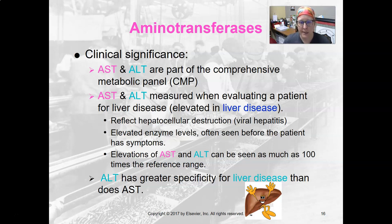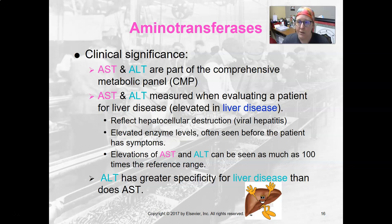They're elevated in liver disease and reflect hepatocellular destruction — viral hepatitis, toxic hepatitis, autoimmune hepatitis, all of those. You can usually detect high enzyme levels before patients have symptoms, which is really helpful. They're also used to monitor damage that might be caused by drugs patients are taking. If the AST and ALT start to climb, that may suggest the drug is causing liver damage. Together they can be elevated as much as 100 times the reference range, indicating hepatitis, massive liver injury, or some major problem.